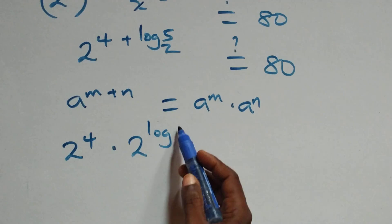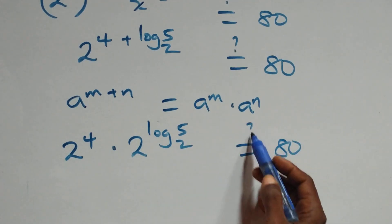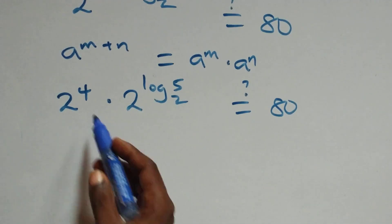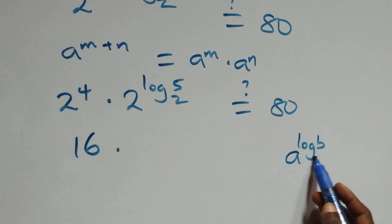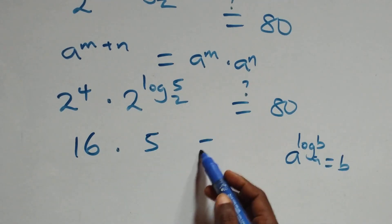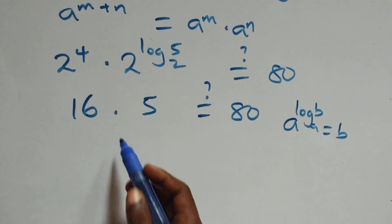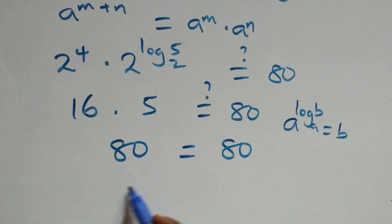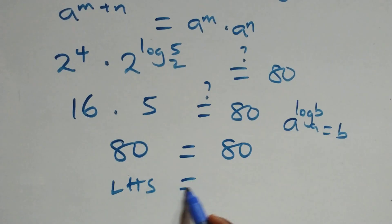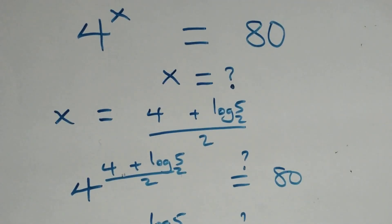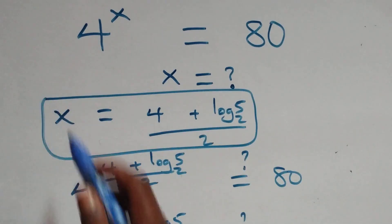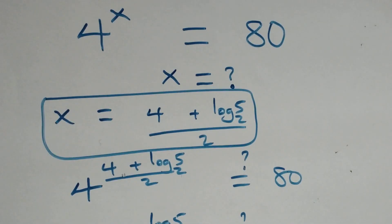We get 2 raised to power 4 times 2 raised to power log base 2 of 5, which equals 80. Since 2^4 equals 16 and using the identity a raised to log base a of b equals b, we get 16 times 5 equals 80, which confirms the left-hand side equals the right-hand side. Therefore x equals (4 plus log base 2 of 5) over 2 satisfies the given problem. Thank you for watching, don't forget to subscribe for more videos and turn the notification bell on.